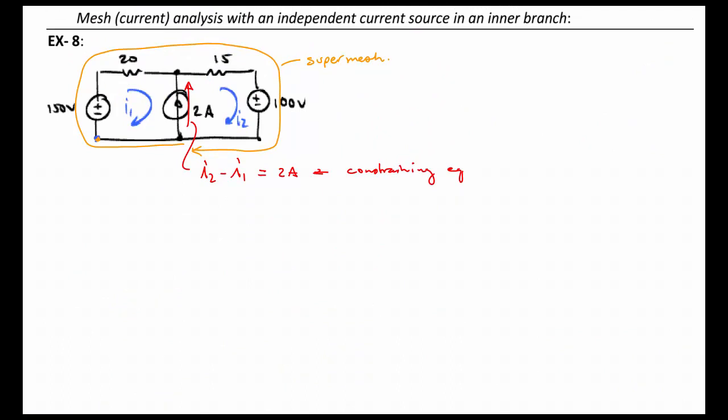This problem actually is quite simple. Whenever you have a current source that's involved in a mesh, you take an alternate approach. If that current source completely defines that mesh current and is not shared with any other mesh, then you're done. It's just like in the last problem, you just say I1 is equal to that current or minus that current. But if that current source is placed between two meshes, then you have to define a super mesh and write one KVL equation that goes around the combination of those two meshes.